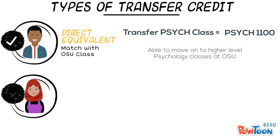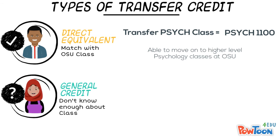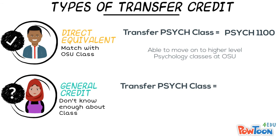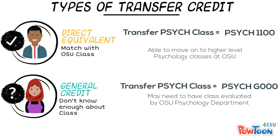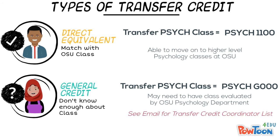Sometimes we don't know enough about the content of a class to determine if it matches directly with an Ohio State class. These classes transfer as general credit, which shows up as G000. For example, if you took a psych class at your previous institution but we don't know if the content is the same as our Psych 1100, you would be awarded Psych G000 credit. In order to move on to higher level psych classes, you would need to get the course evaluated by the Psych department by submitting the syllabus from your previous institution to the transfer credit coordinator here at Ohio State, along with some additional documentation. See the email we sent you for a link to the transfer credit coordinator list.